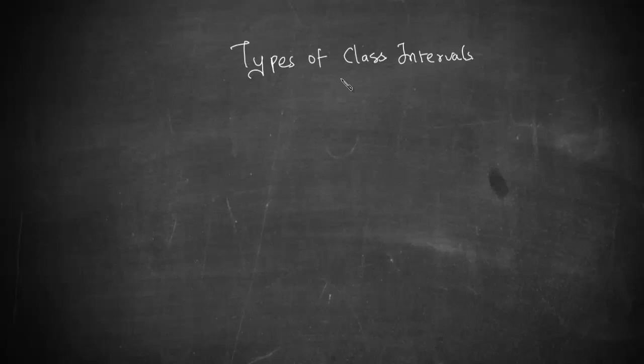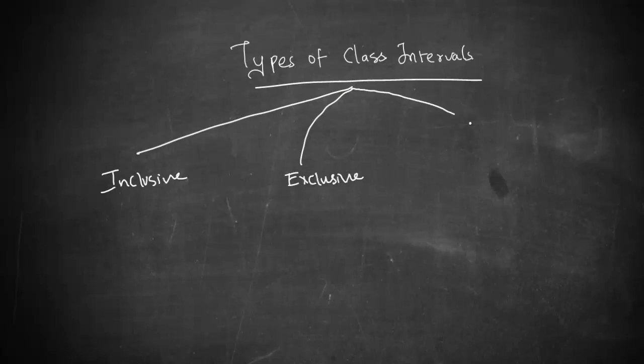We were talking about class intervals. Class intervals can be categorized into three types: number one is inclusive method, number two is exclusive method, and number three is open-ended classes.